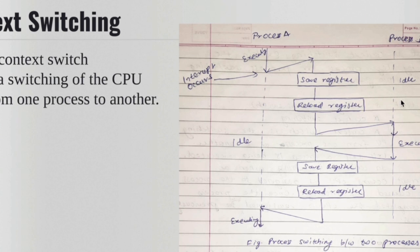Then we reload the register. Process B starts executing once it finishes executing. Again we save the information of the context of process B in the register. We reload the context of process A because we had saved that information earlier in the PCB.